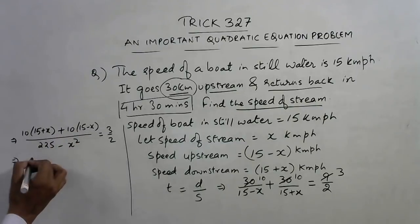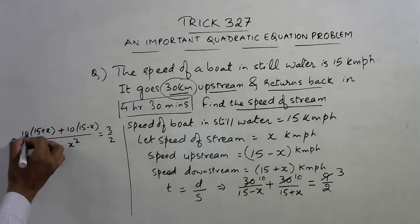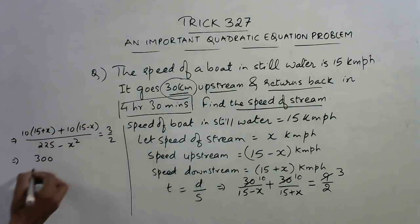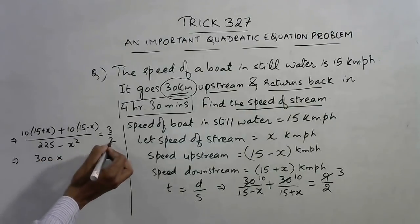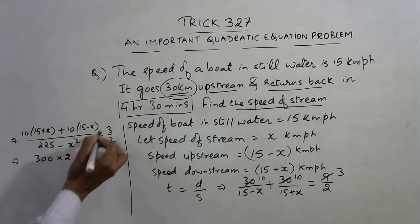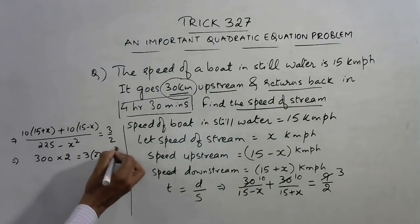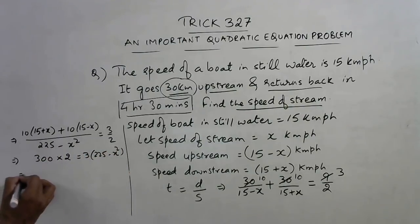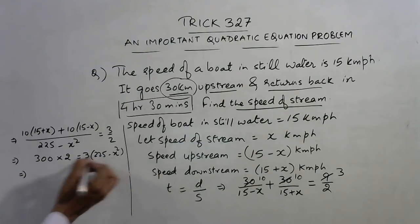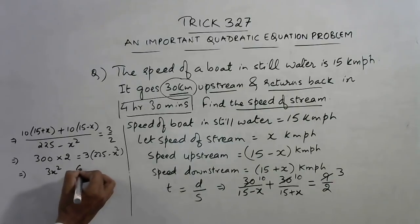150 plus 150 is 300, plus 10x and minus 10x cancels out, and this 2 gets cross multiplied and this 3 gets multiplied with 225 minus x square. So in the next step we have this minus 3x square on this side. This is 675 minus 600.